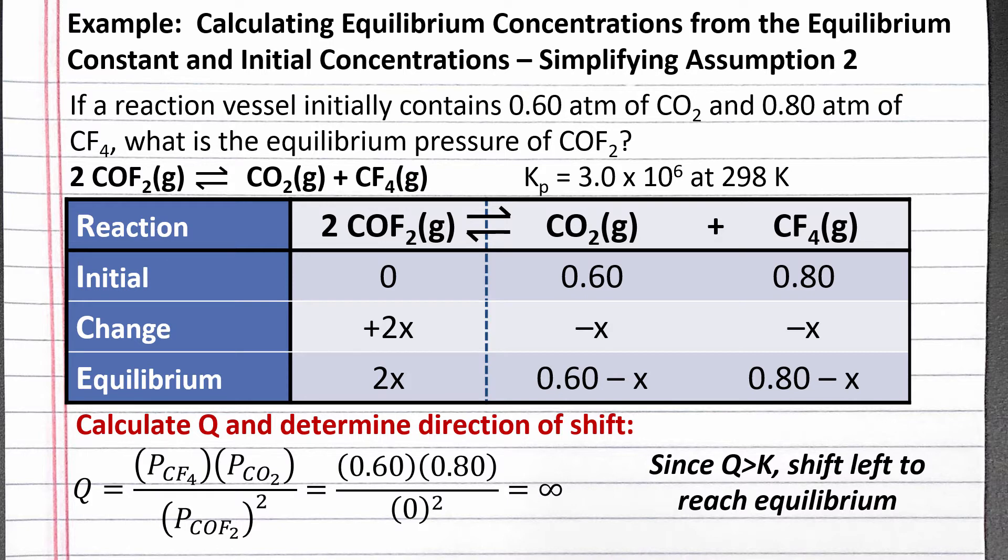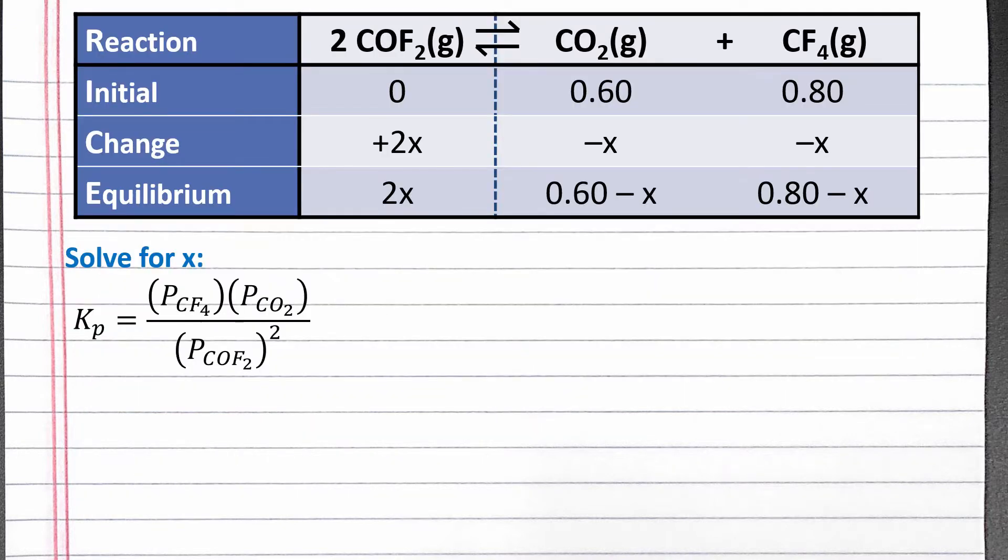The equilibrium row is the initial row plus the change row. Now we need to solve for x using the equilibrium constant expression. The value of Kp was given in the problem, and we can plug in the equilibrium row of the RICE table for the pressures.